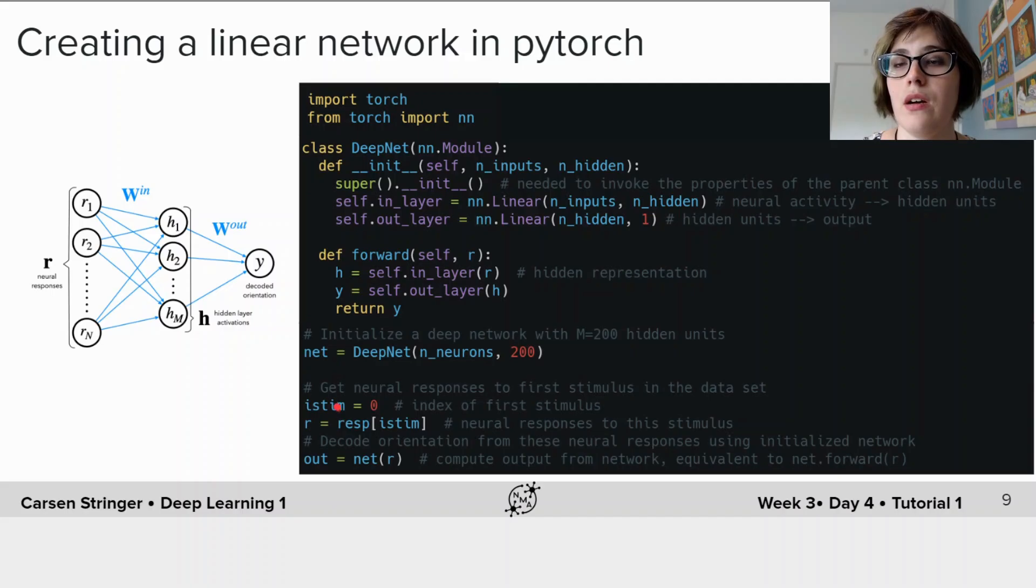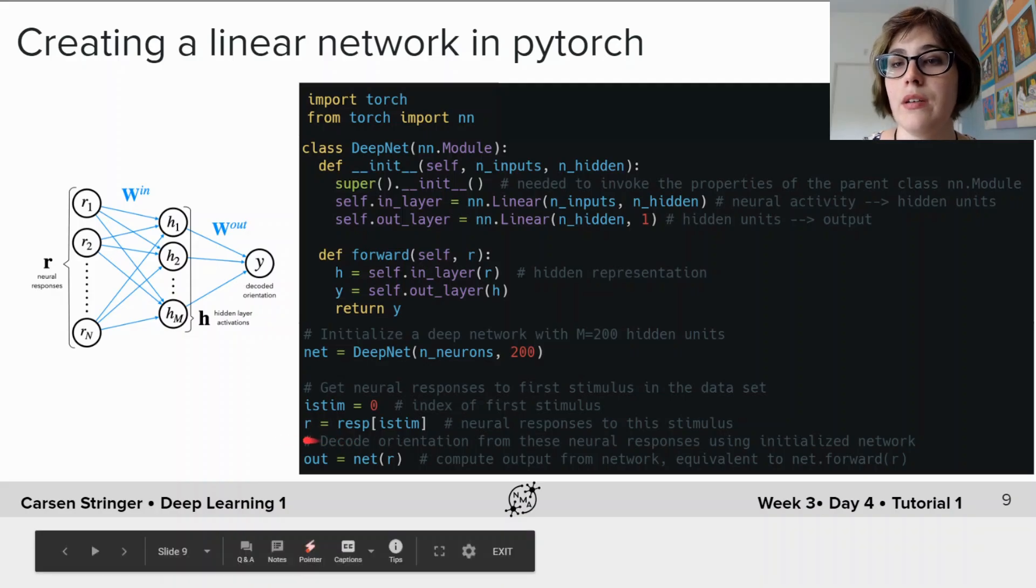Now let's run our neural responses through this deep through this net. So we're going to take our neural response to a single stimulus i_stim of zero in this case and we're going to run the response through the network using this call of net as a function here and this call calls the forward pass.